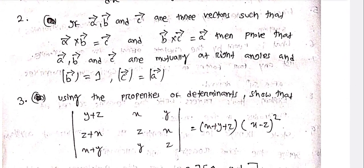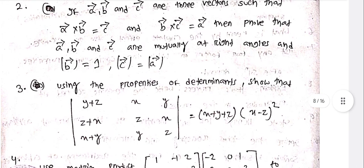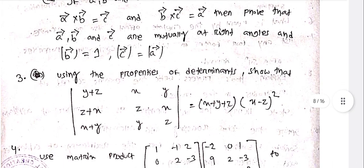If vectors a, b, and c are three vectors such that a⃗ · b⃗ = c⃗ and b⃗ × c⃗ = a⃗,